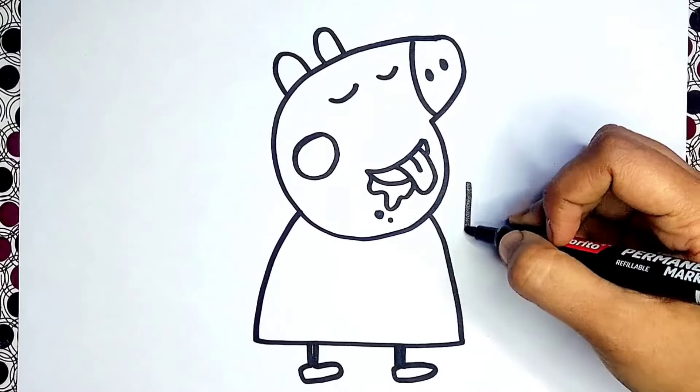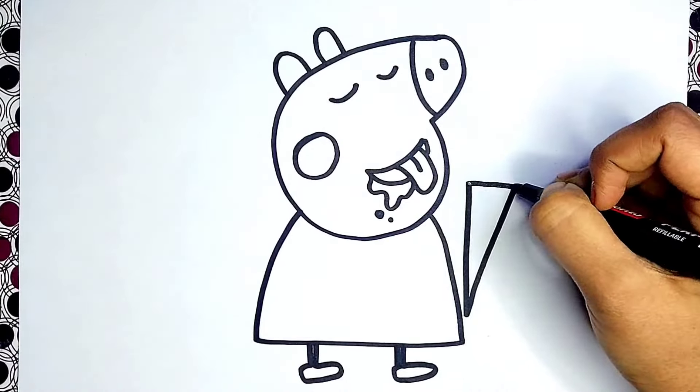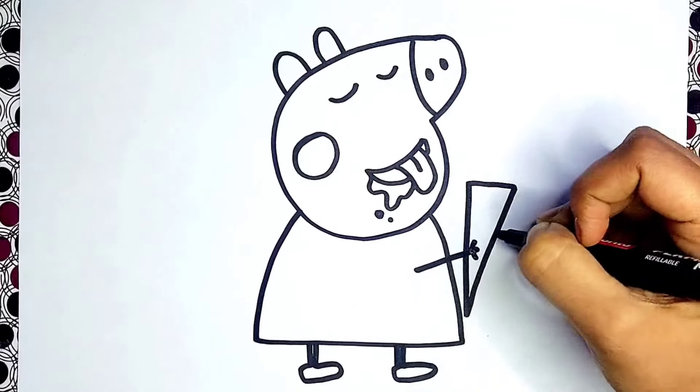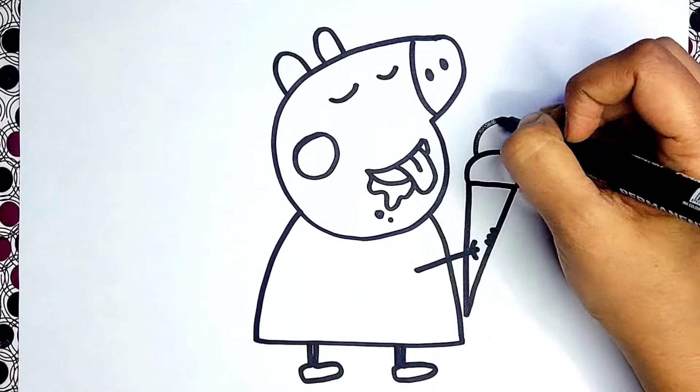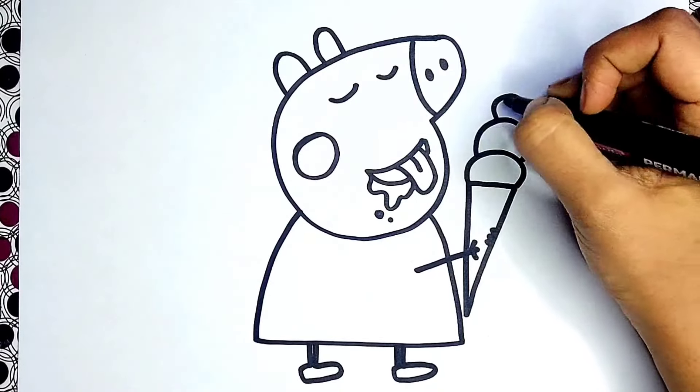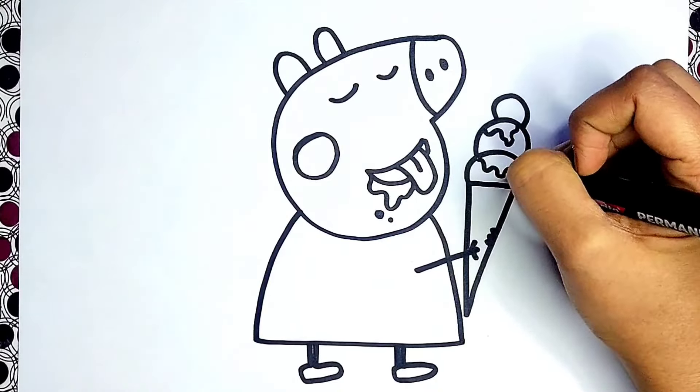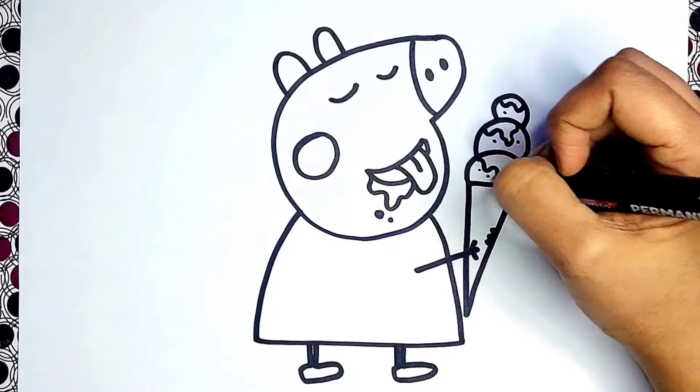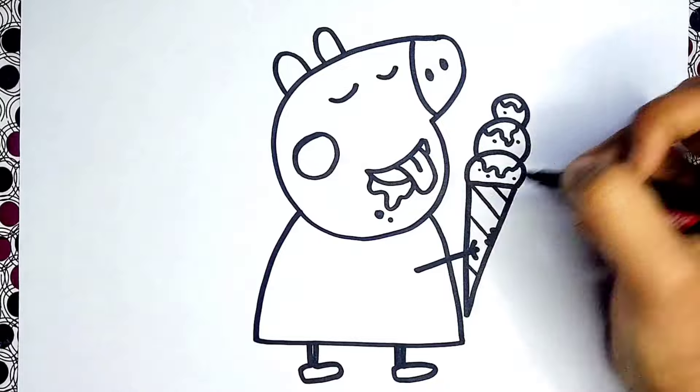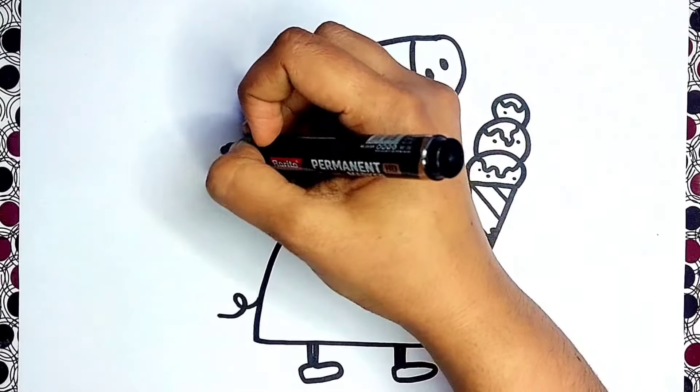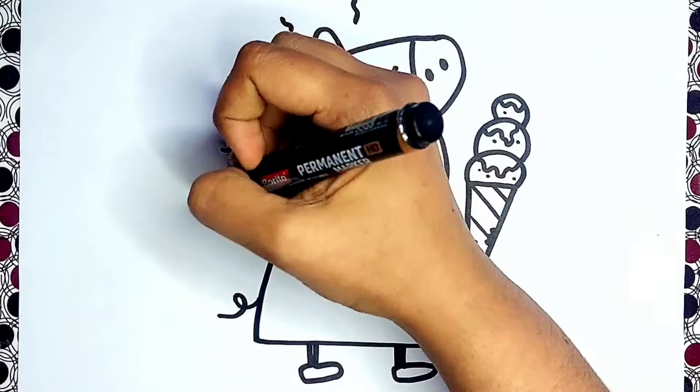Now I'm going to draw a very big ice cream for Peppa. She is holding the ice cream with her hands. Great! Now I'm going to draw Peppa's tail and add some detailings.